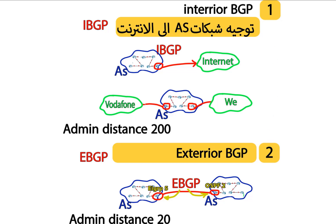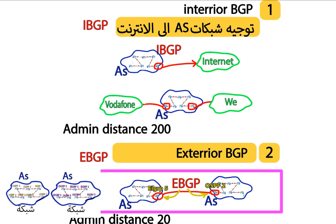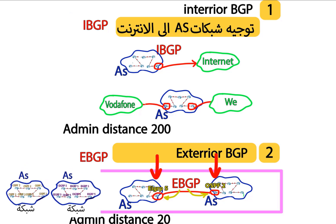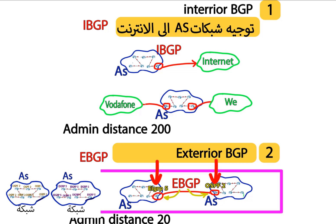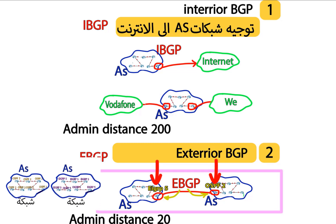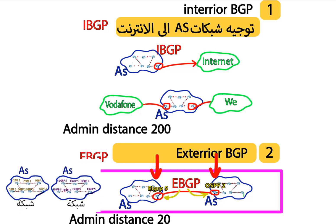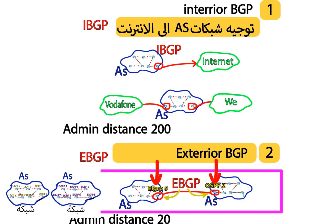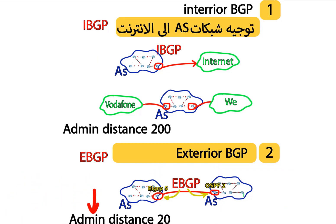The second type is eBGP, which is the External BGP. This connects networks that have different autonomous systems — like the example shown here, where each network has a different autonomous system, one running EIGRP 5. The administrative distance of eBGP is 20.